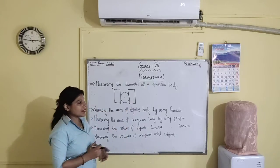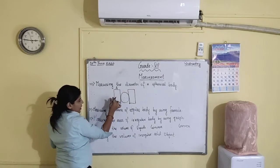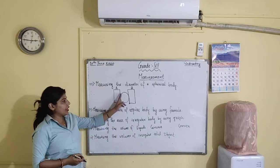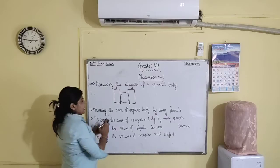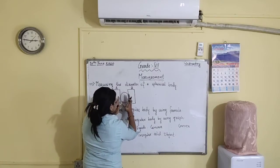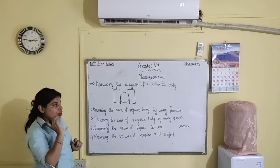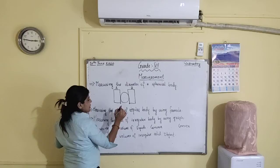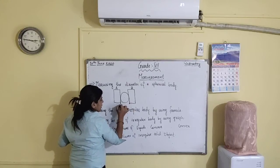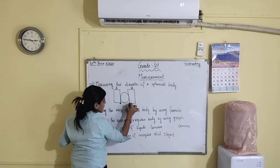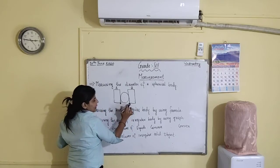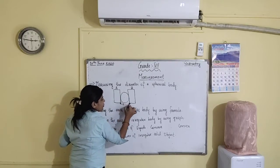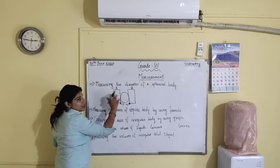For this, we need two rectangular blocks. Here you can see in the picture, I have got rectangular block A and rectangular block B. I have adjusted this spherical object so that it is just in between these two rectangular blocks. Now, to find the diameter, by using a scale, measure the distance between the two ends of the rectangular blocks that are touching the spherical body. This will give you the diameter of the spherical body.